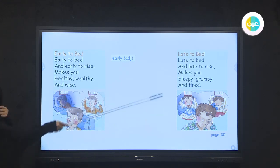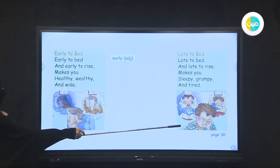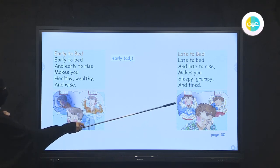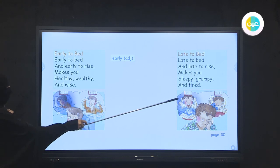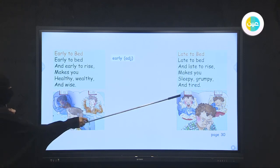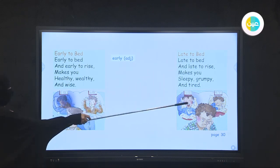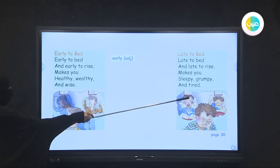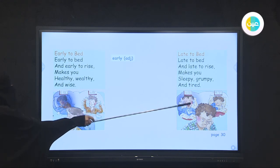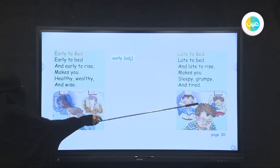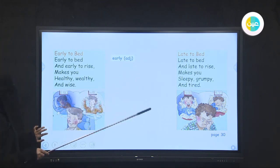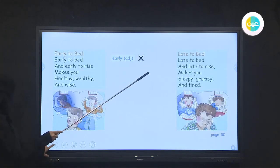Look at the second part of the chant. Look at this boy — at what time does he go to bed? At eleven o'clock. Is it early to sleep at eleven? No, it's late. What time does he get up? At nine o'clock. Is it early? No, it's late to get up. So 'early' is the opposite of 'late.' Early and late are opposites.